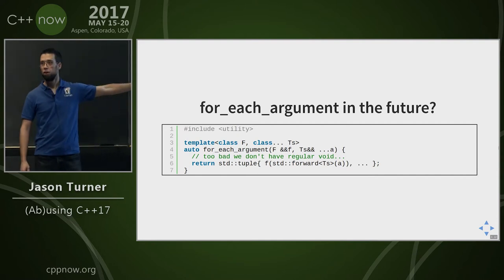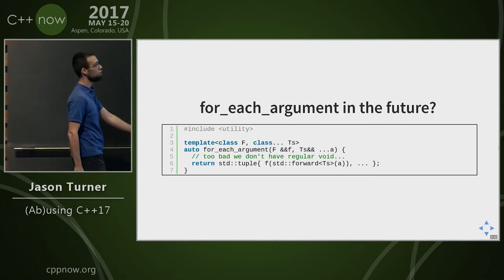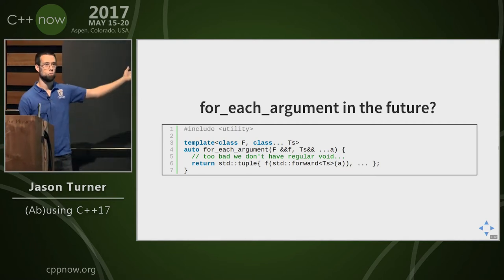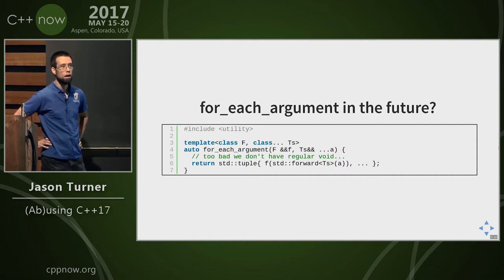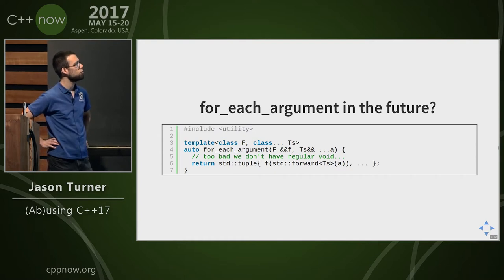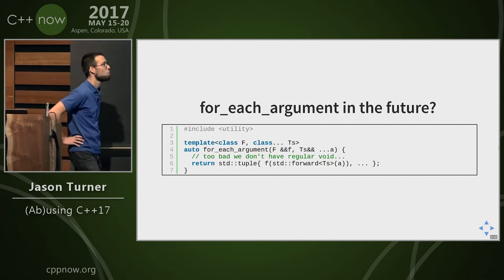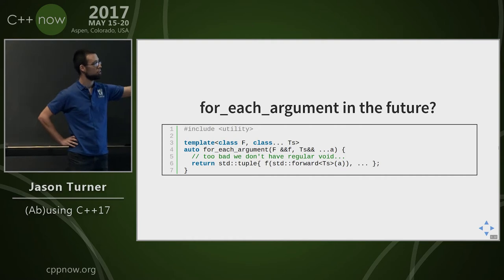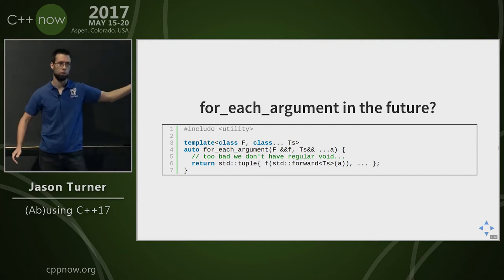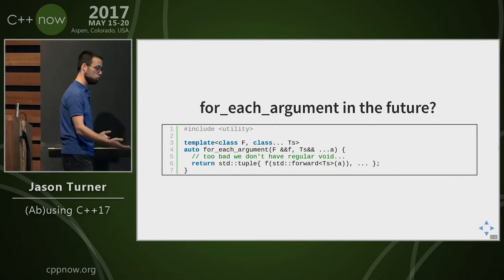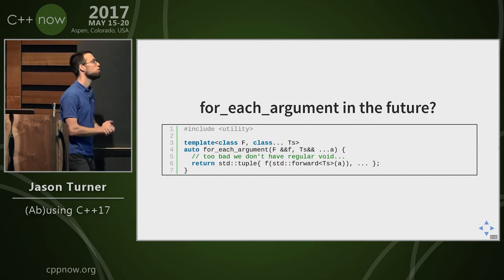Too bad we don't have regular void yet. If any of these functions were to return void, this would fail to compile. Also, if you have exactly one function that returns a tuple itself, then we'd effectively be invoking a move into the tuple we want to return and it would get flattened — instead of being a tuple of a tuple, it would just be a tuple. That's the beauty of template argument deduction.